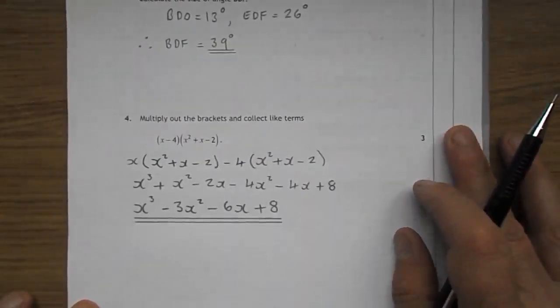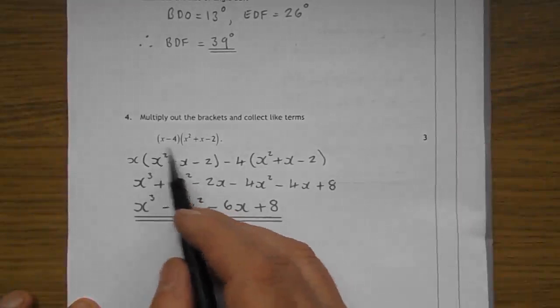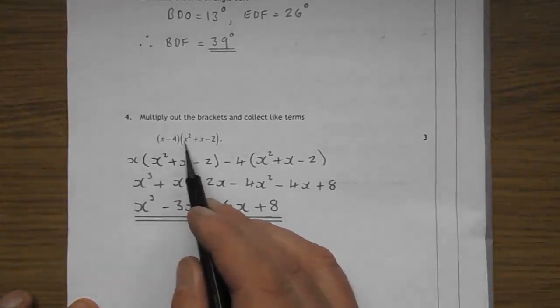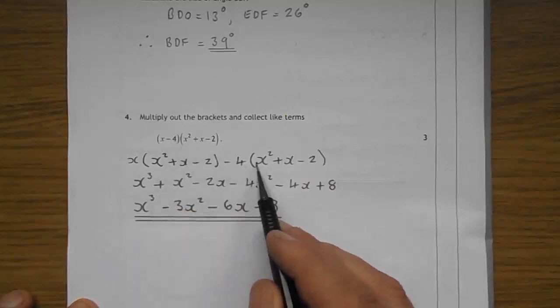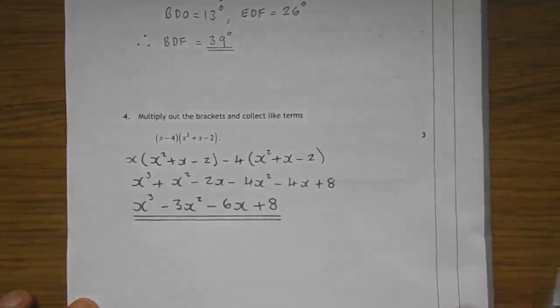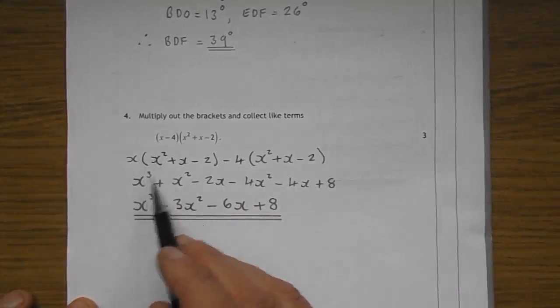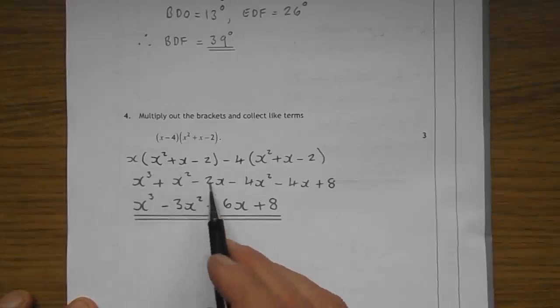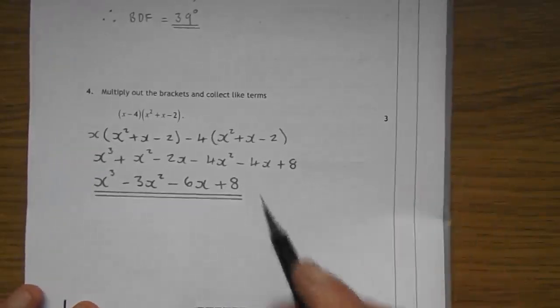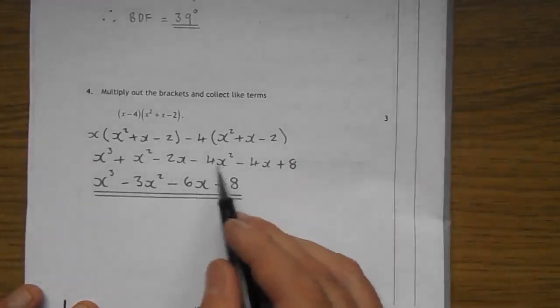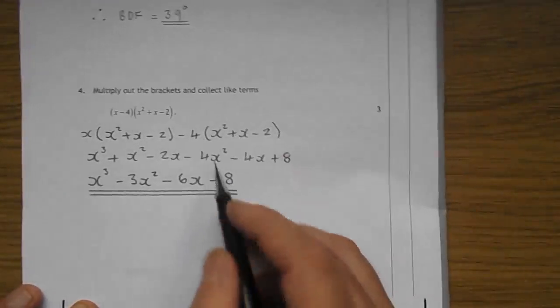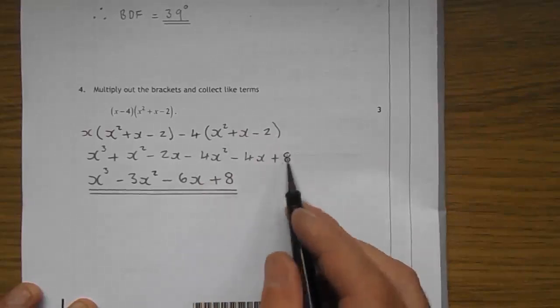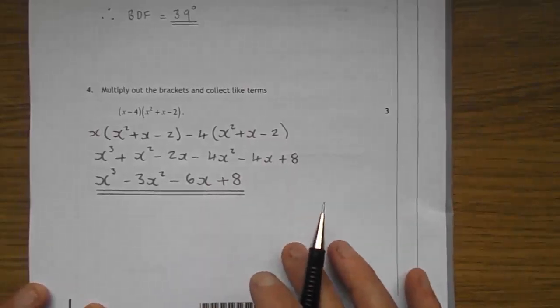Question 4. Now, we've done a few of these in the past. So, hopefully, you did this one fine. The X drops down. Times X squared plus X take 2. Take 4. Over there. Times X squared plus X take 2. X times X squared. X cubed. Plus X times X. X squared. Take 2X. There we have it there. And on the other side of it. Take 4X squared. Take 4 times plus X. Is take 4X. Take 4 times take 2. Is plus 8.